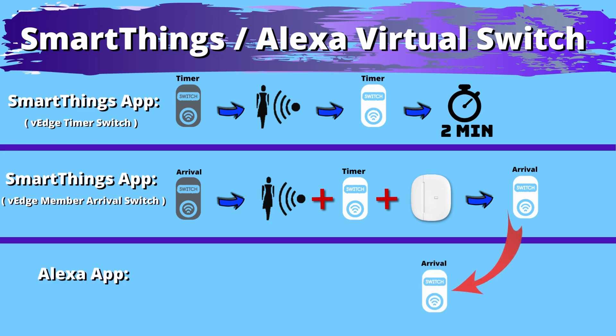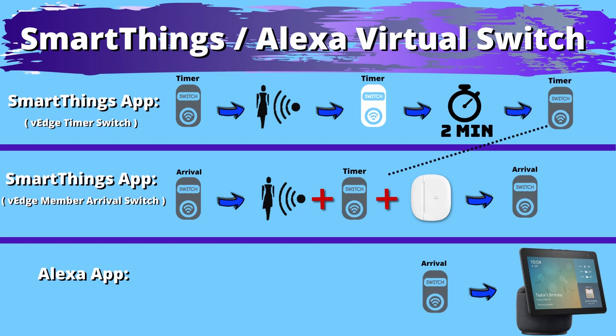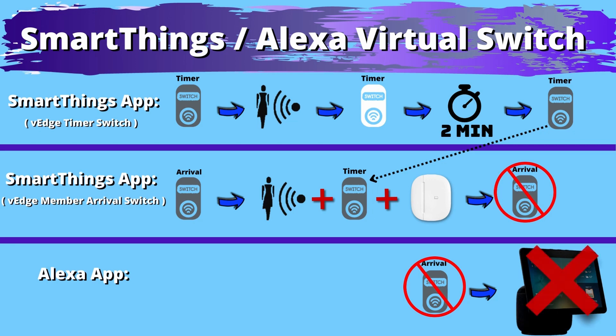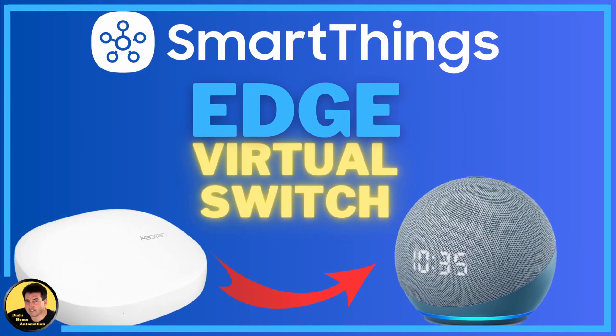That status is relayed over to the Alexa app, which then triggers the routine to announce my arrival. If the two-minute timer has expired, that timer switch turns off, so one of the three conditions necessary for the arrival switch to turn on is not met — the arrival switch will not turn on and therefore a notification will not be given. So if the door is opened after the two-minute time period, no notification will occur.